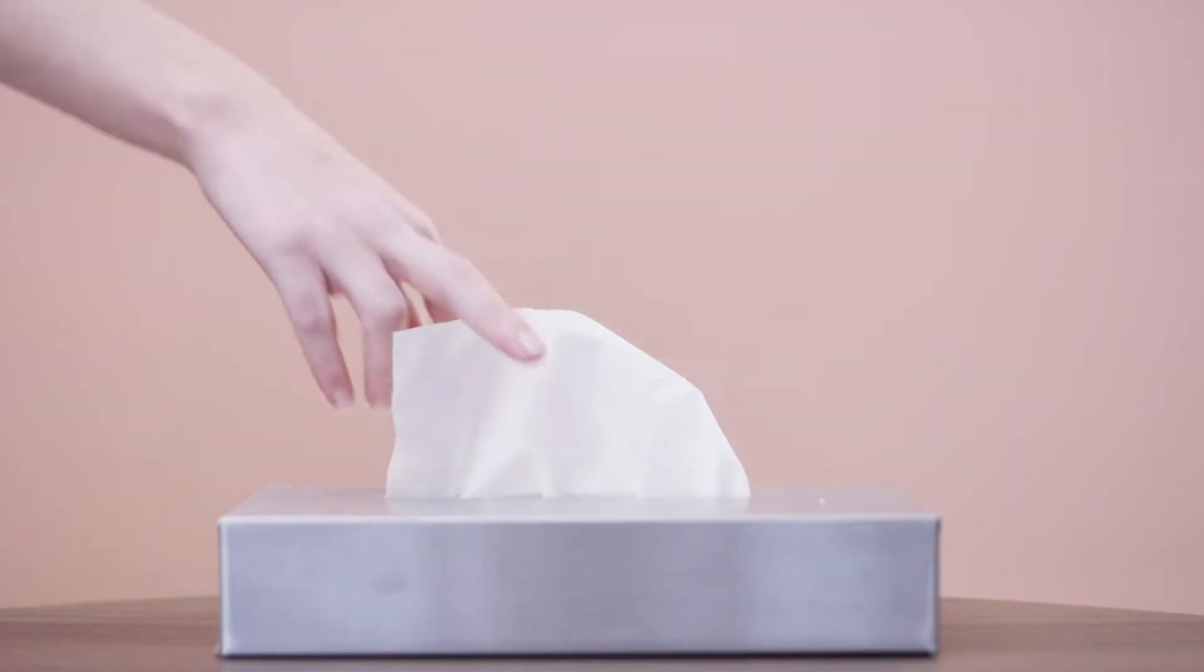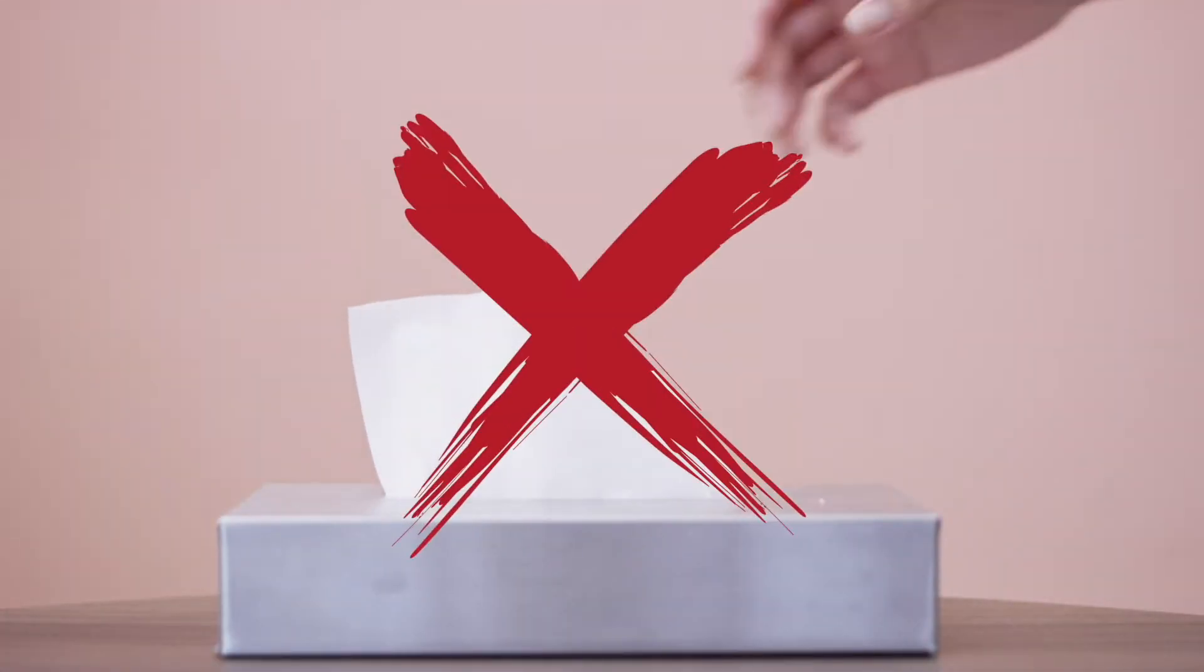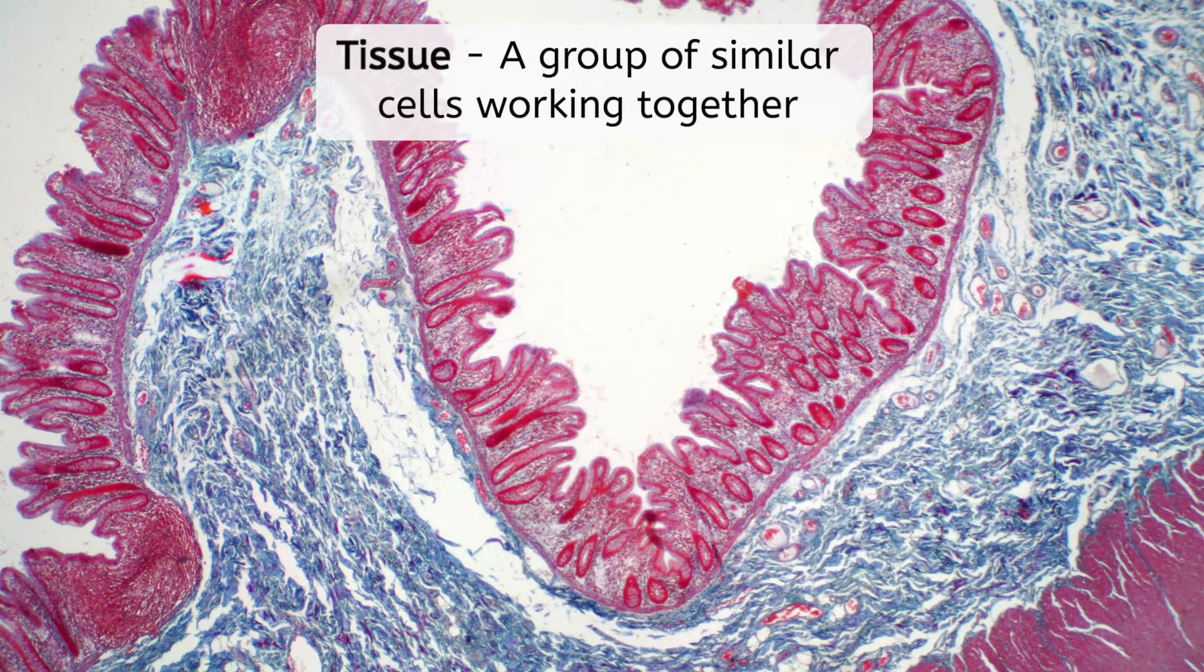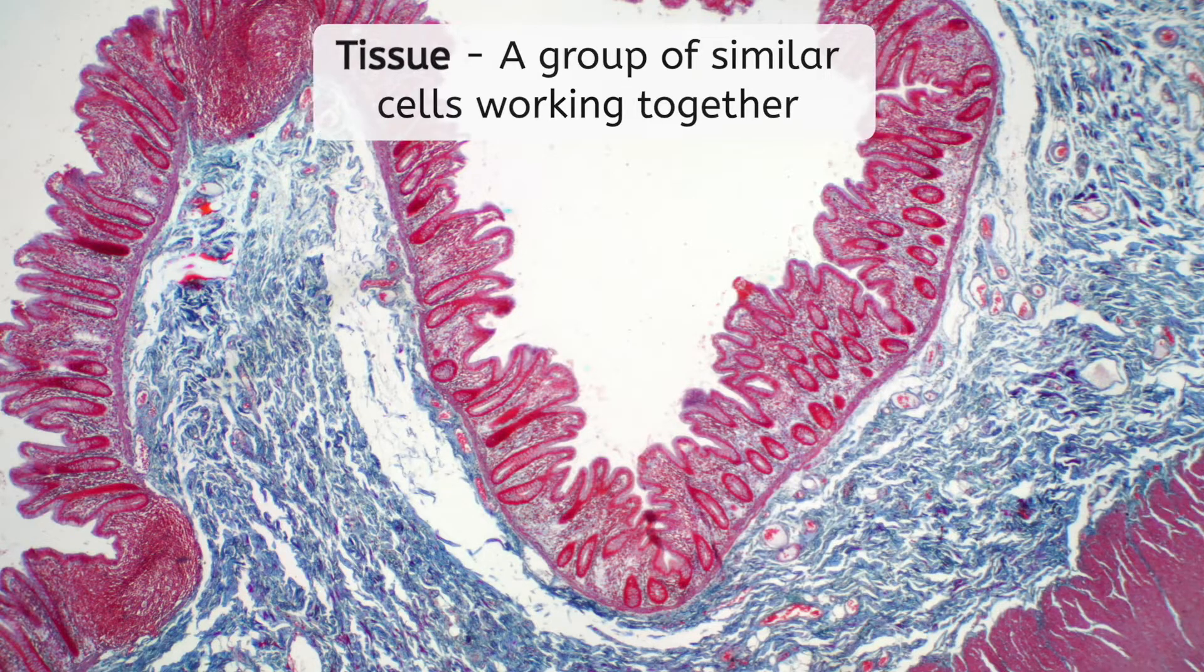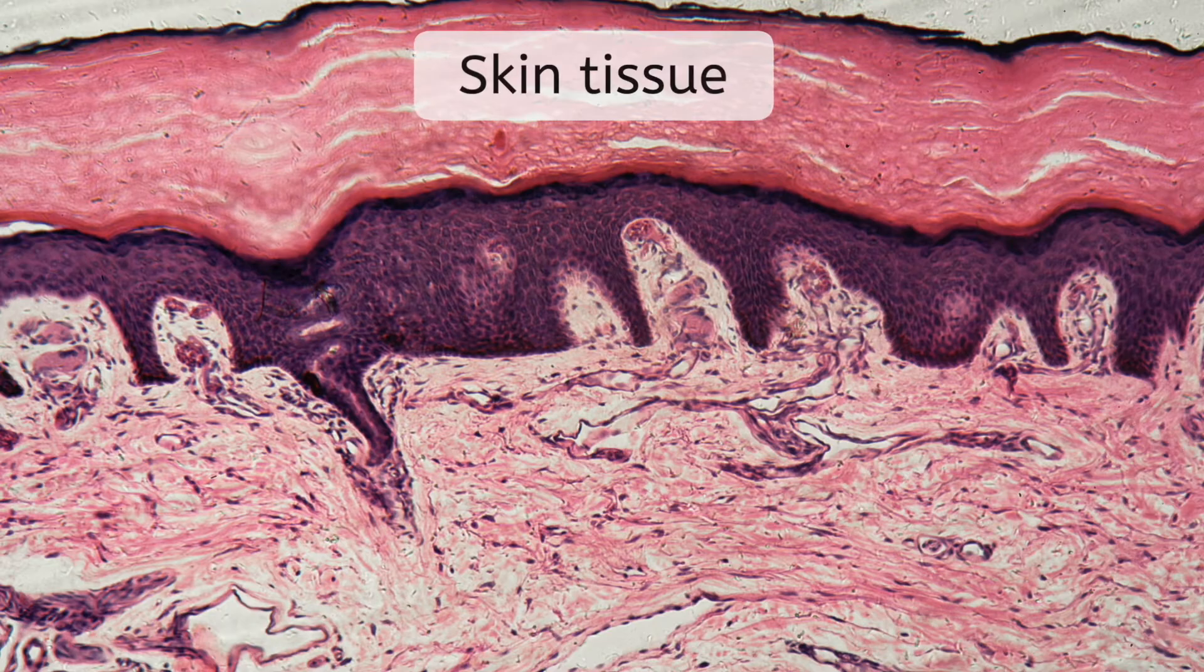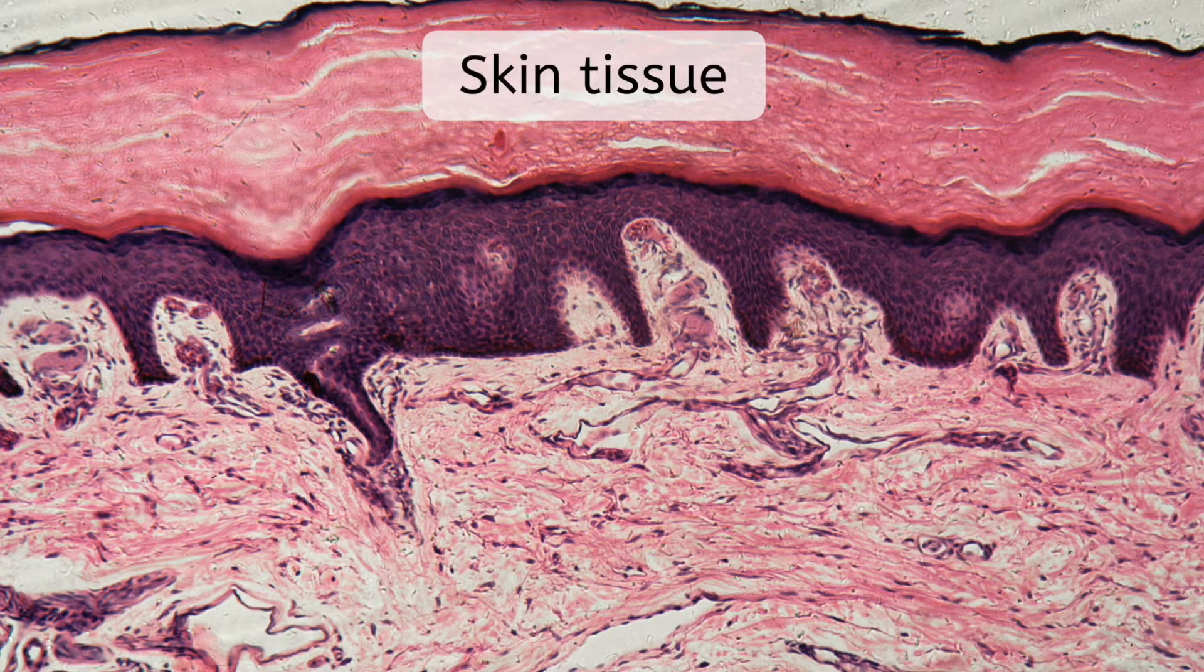Do you know what a tissue is? No, not that kind of tissue! In biology, tissues are groups of similar cells that work together. For example, humans have muscle tissue, skin tissue, as well as others that you'll learn in a later unit.